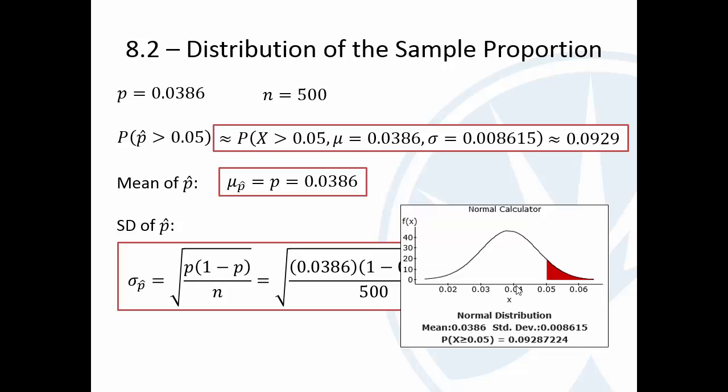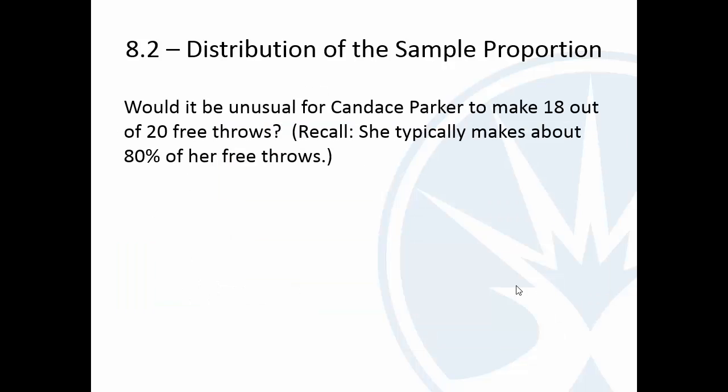Whew. All right. Probably going to need to watch this video a couple times. We'll do some examples in class as well. But I have one more special case I want to talk about. So let's go back to Candace Parker. What's the probability that she makes 18 or more of her free throws out of 20? She typically makes 80%. That's essentially 90%. So what's the probability that she makes 90% or more if her true chance of making it is 80%?